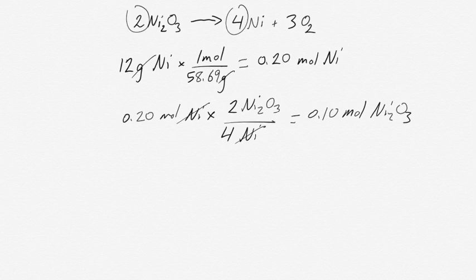This means in order to make 12 grams of nickel, you must have started with at least 0.10 moles of nickel 3 oxide. Now it's also possible to use these mole ratios, these stoichiometric coefficients, in the forward reaction. You can say, if you started with a certain amount of nickel oxide, how much product do I make? How much oxygen or nickel do I make?